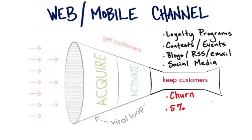But imagine if you could reduce churn to 1%, so that every month only 1% of these customers left. So after 36 months, with 1% attrition, you'd have 70% of your customers left.